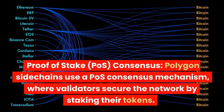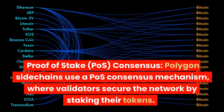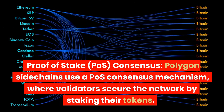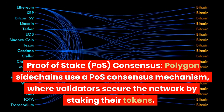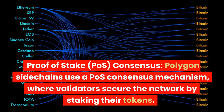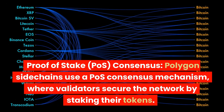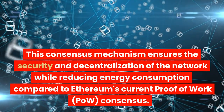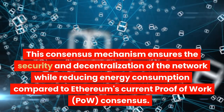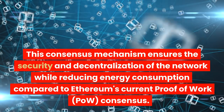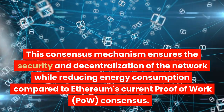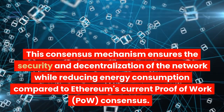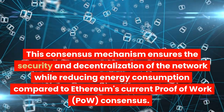Proof of Stake consensus: Polygon CIDA chains use a PoS consensus mechanism, where validators secure the network by staking their tokens. This consensus mechanism ensures the security and decentralization of the network while reducing energy consumption compared to Ethereum's current proof-of-work, PoW, consensus.